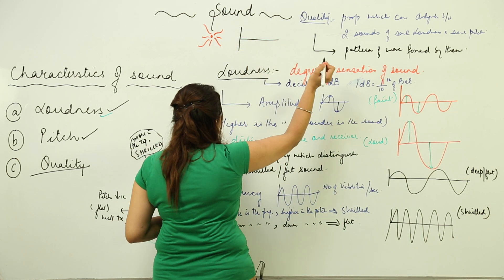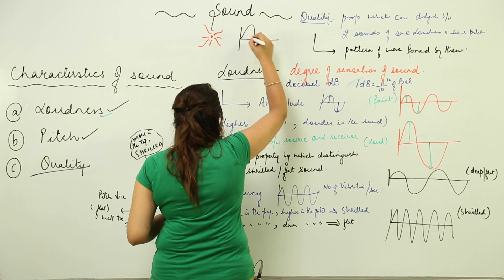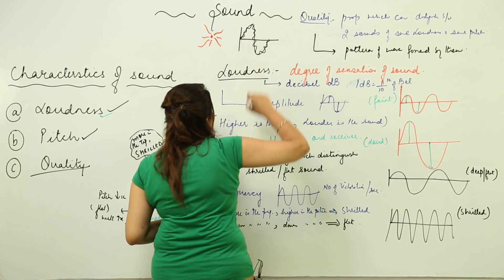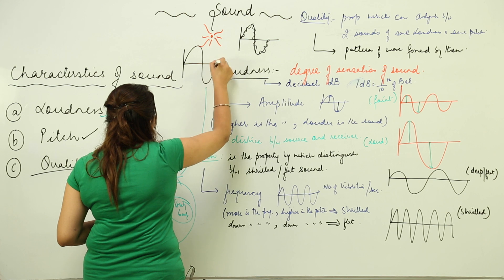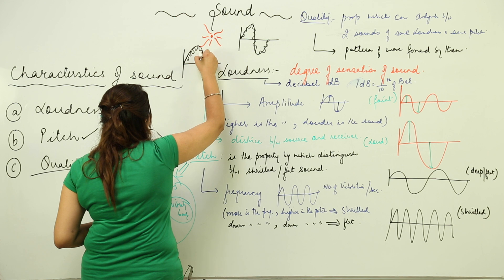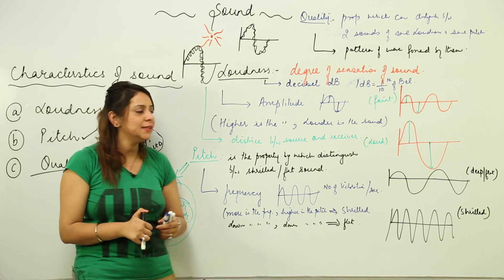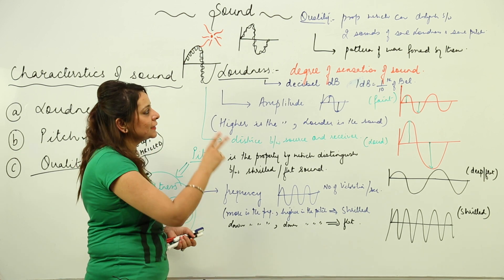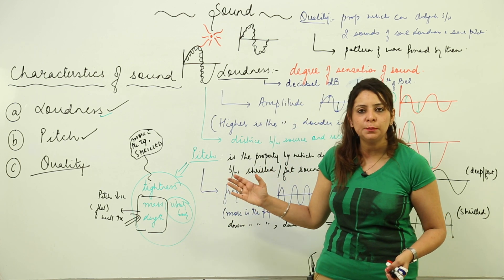Suppose I draw a graph for the guitar sound — let's say the waveform is like this. And for a drum sound, I say suppose it is like this. They are just forming different wave patterns, due to which we can actually distinguish between two different sounds of the same pitch and same loudness. So these are the three important characteristics of sound: loudness, pitch, and quality.